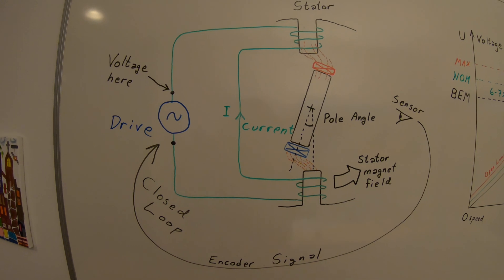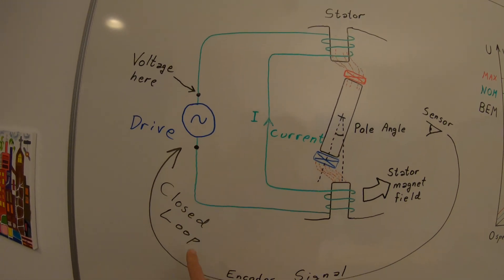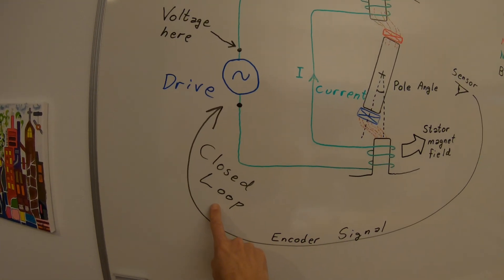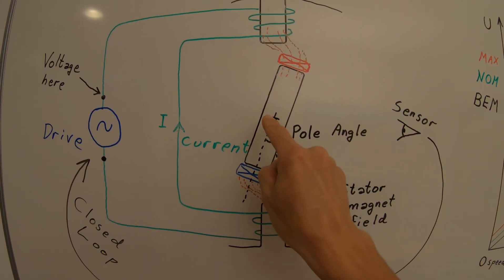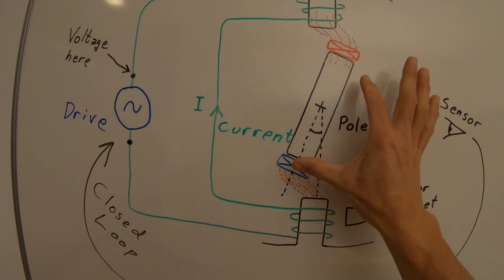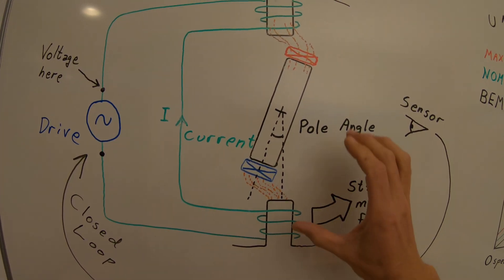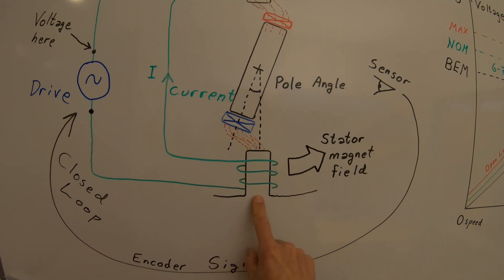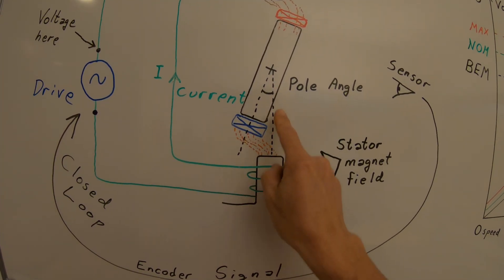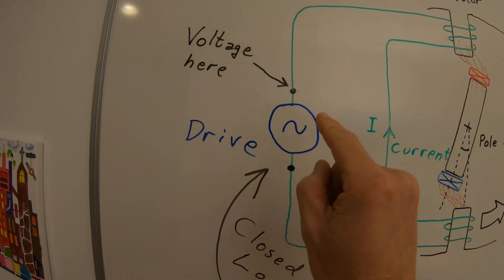The way it's done in a frequency converter is with a closed loop control. We have a computer to control this. We put a sensor on the shaft so that we always can see how the rotor is positioned in reference to the stator magnet field. So this pole angle is known to the frequency converter.